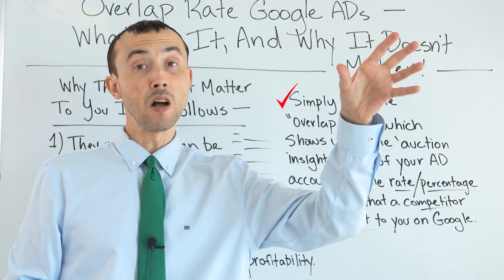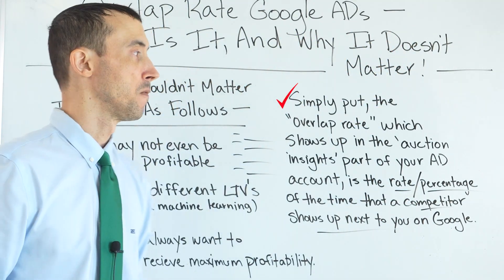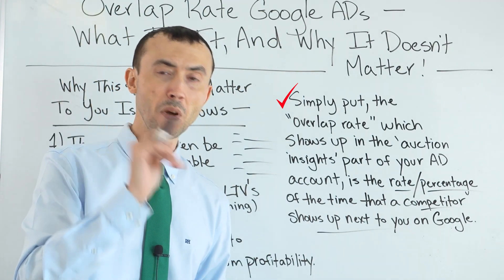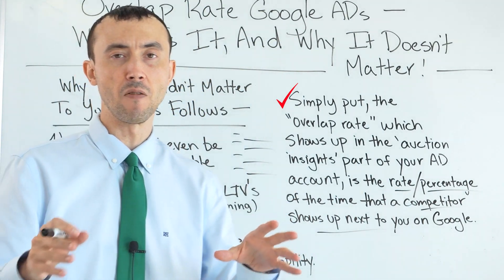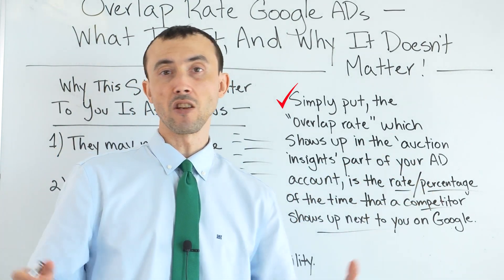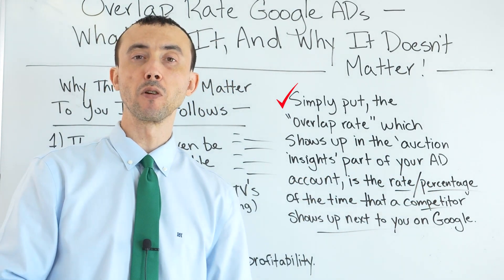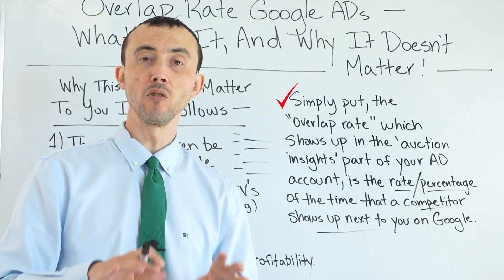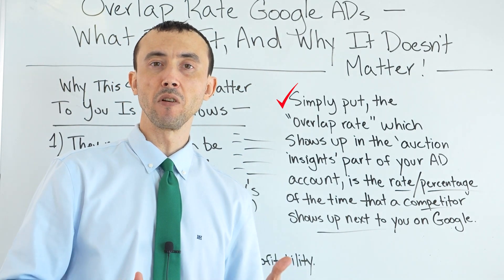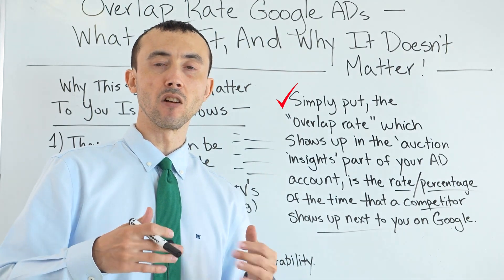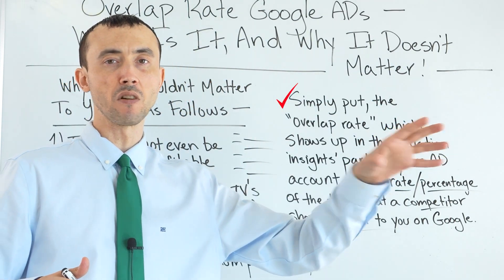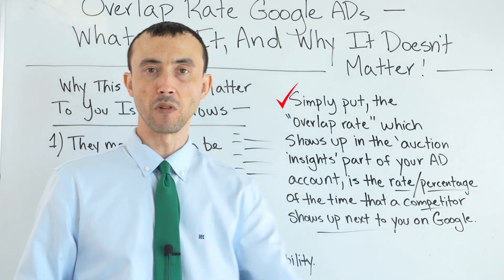Even if a competitor is much bigger than you, bigger companies are usually surviving off repeat, existing relationships — not off their Google Ads — whereas you as a smaller business are relying on the profitability of your Google Ads on a short-term basis. So trying to replicate what they're doing is just a quick way to go bankrupt.